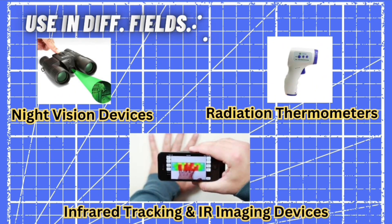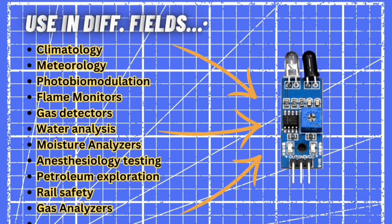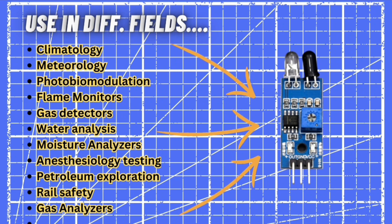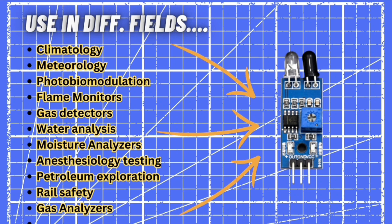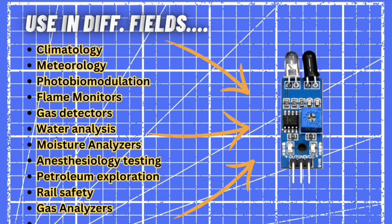IR sensors are used in many different fields, including night vision devices, radiation thermometers, infrared tracking, and IR imaging devices. Additional fields include climatology, meteorology, photobiomodulation, flame monitors, gas detectors, water analysis, moisture analyzers, anesthesiology testing, petroleum exploration, rail safety, and gas analyzers. These are the various fields where IR sensor technology is being used.